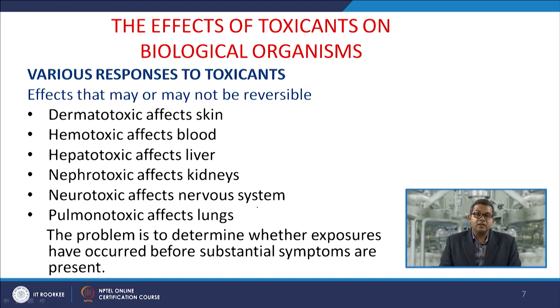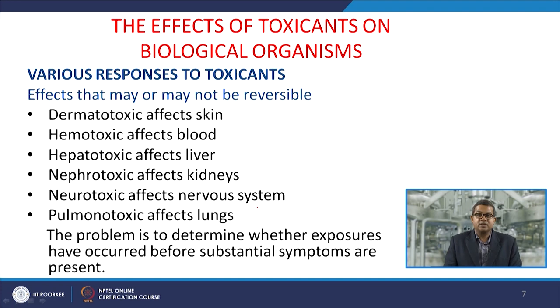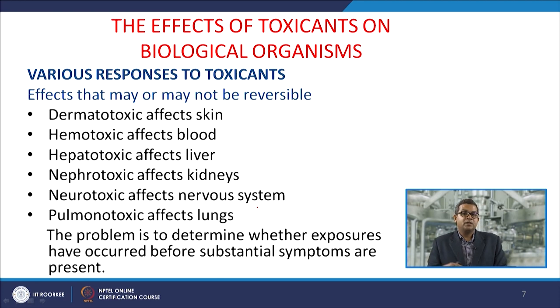Hematotoxic substances affect the blood. Hepatotoxic substances affect the liver, with deposits visible in liver function. Nephrotoxic substances affect the kidney, hampering the detoxification step. Neurotoxic substances affect the nervous system — recall that in World War I, Germans used nerve gas or mustard gas specifically targeting the nervous system. Pulmonotoxic substances affect the lungs; asbestos or lead particles can destroy the available surface area for oxygen and carbon dioxide exchange with the blood.